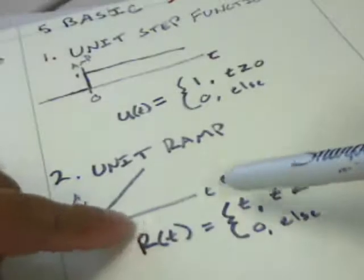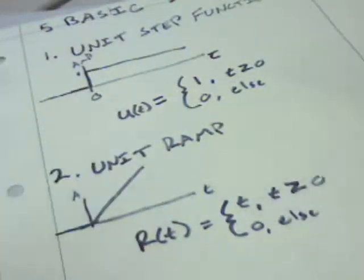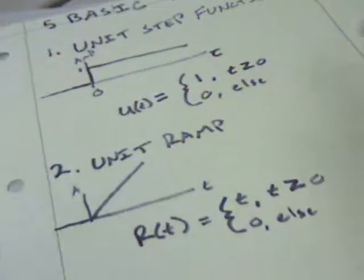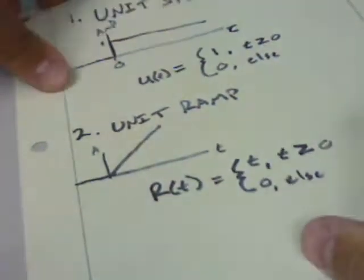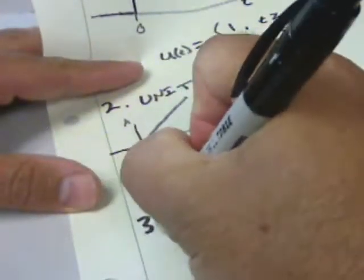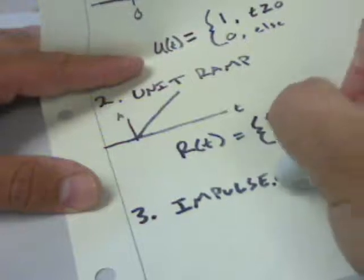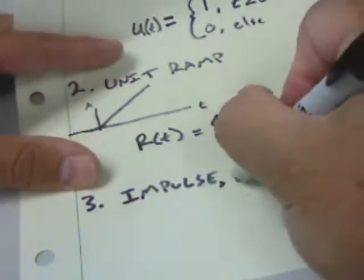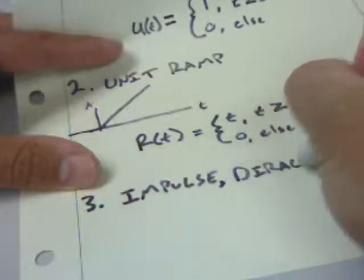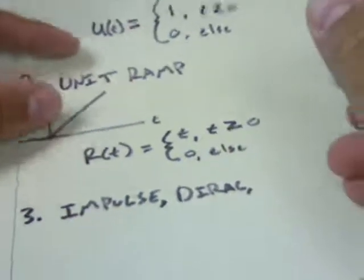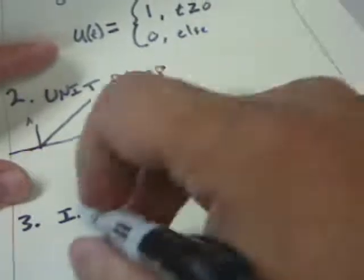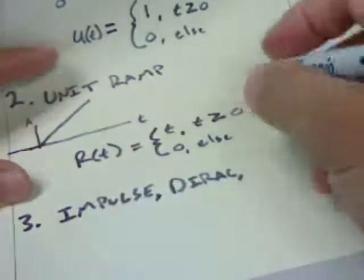So whenever t equals two, the amplitude is two. When t equals one, amplitude is one. That's the unit ramp. The third one is a very important one, and it is what we call the impulse function.